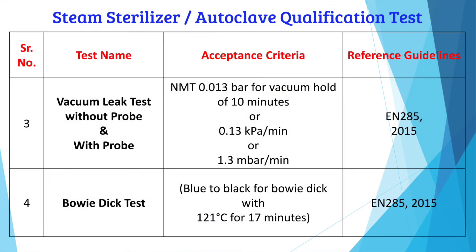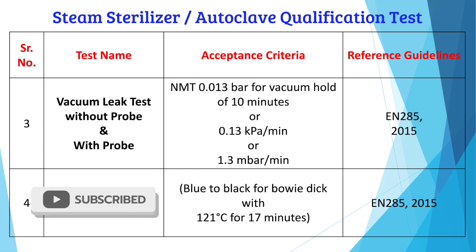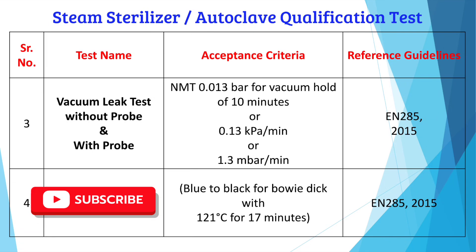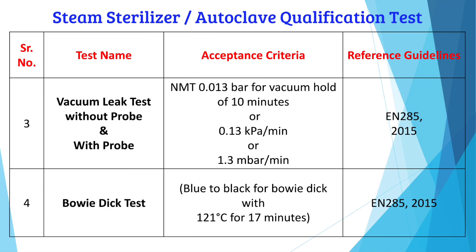The next test is the vacuum leak test, performed both without probe and with probe. The acceptance criteria is not more than 0.013 bar for a vacuum hold of 10 minutes, or 0.13 kPa per minute, or 1.3 mbar per minute. This is given in EN 285:2015.